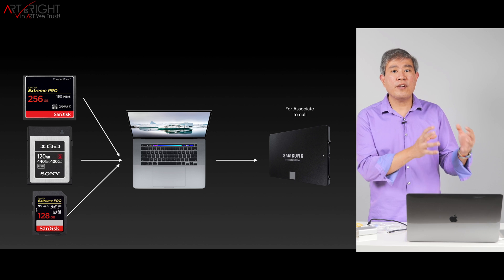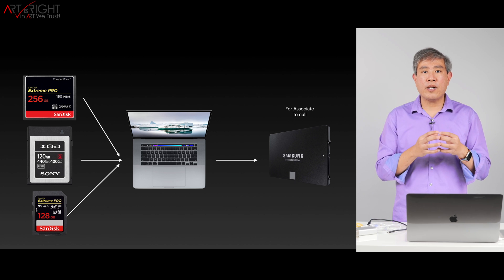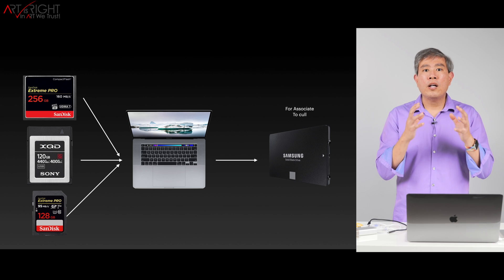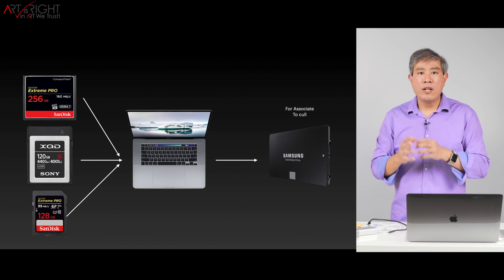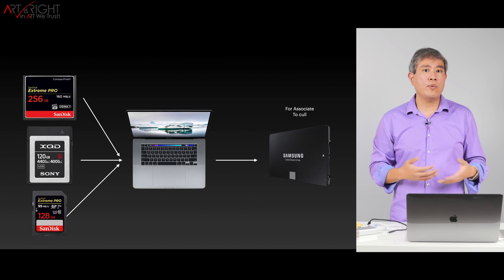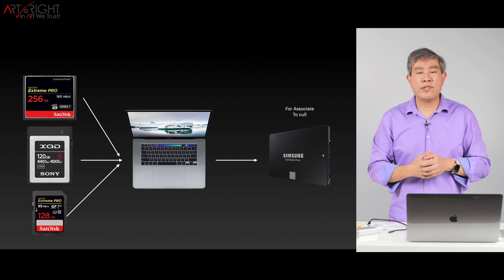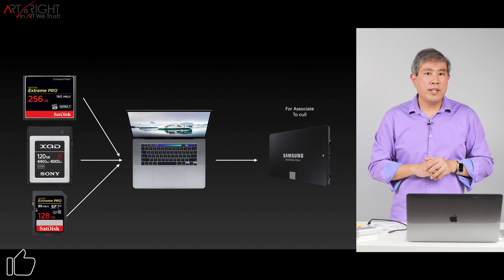Let me give you a little background on my workflow and show you where the bottleneck comes in. At the end of an event or a wedding, we generally gather all of the memory cards together and download them to a laptop we have on site. From there, all the images get copied to an SSD, where my associate does the culling — picking the sharp ones, removing images where somebody's eyes are closed, and so on. The bottleneck doesn't really happen here.